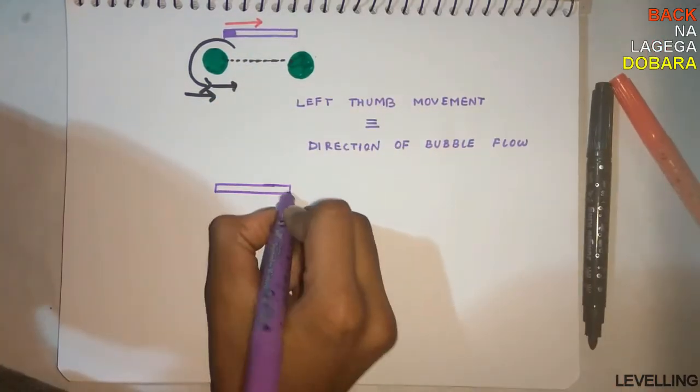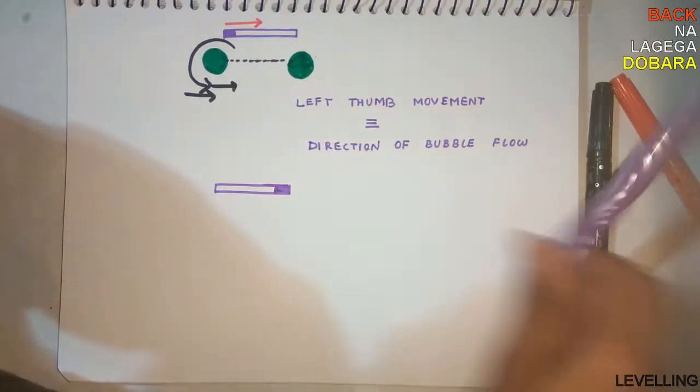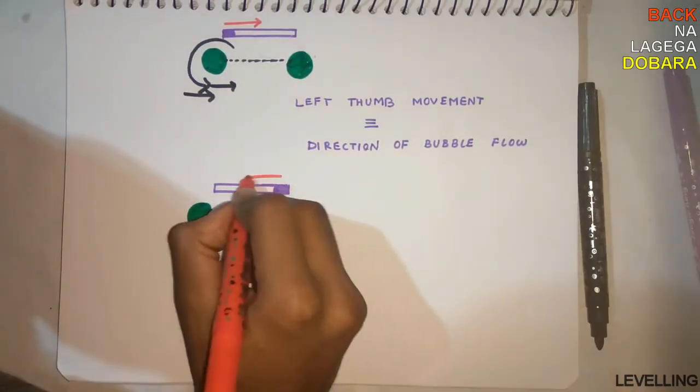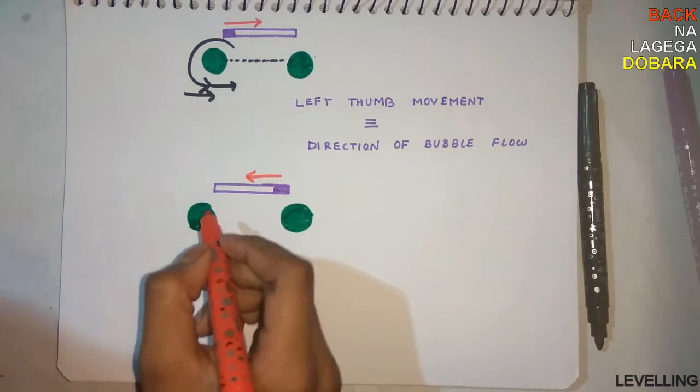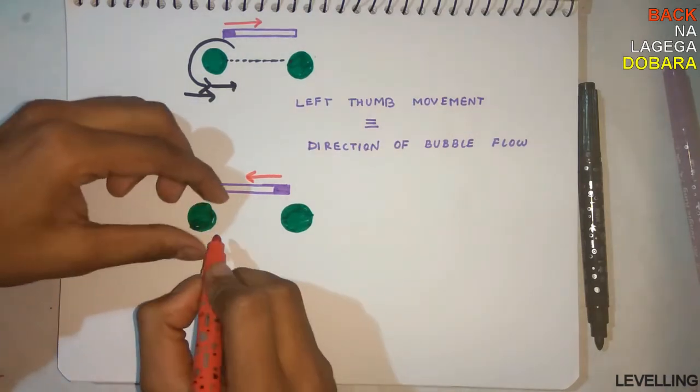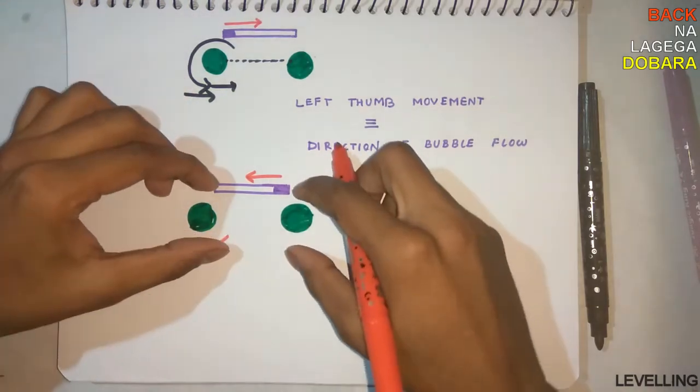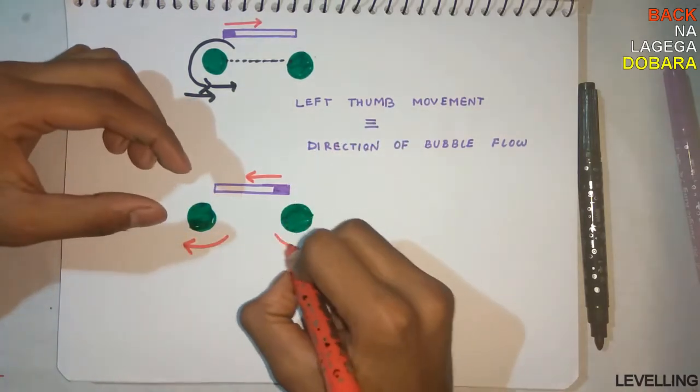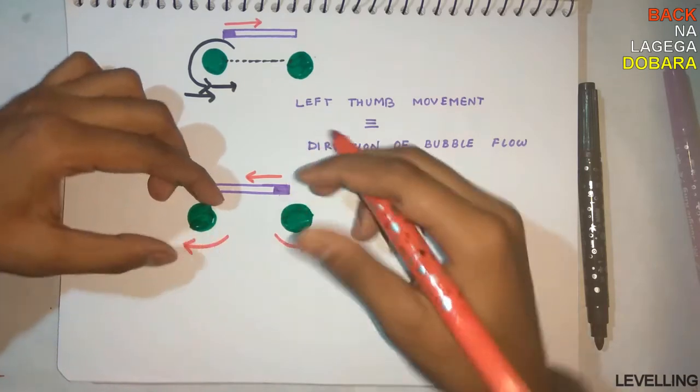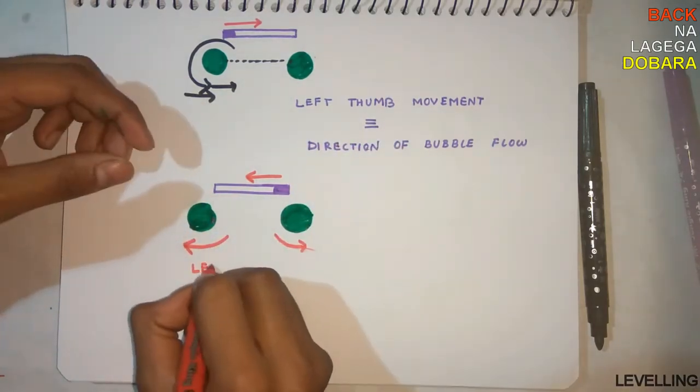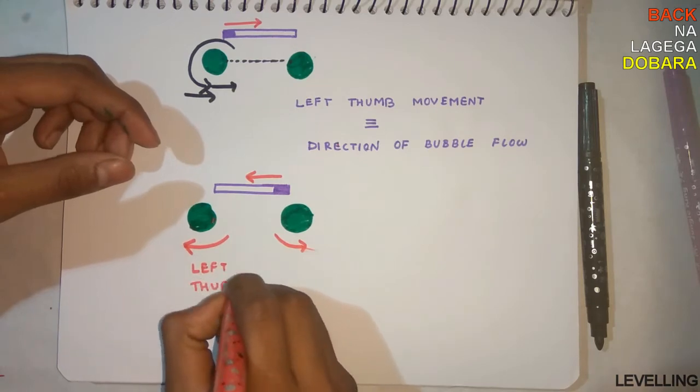Another example: the bubble is on the right, we want it on the left. The left thumb should go left, which means clockwise. Simple. This is the easiest way to understand - just check the left thumb.